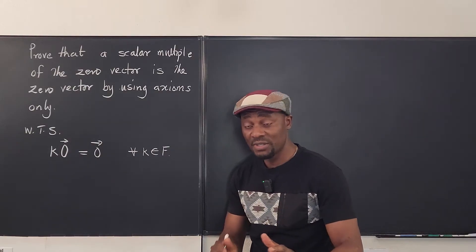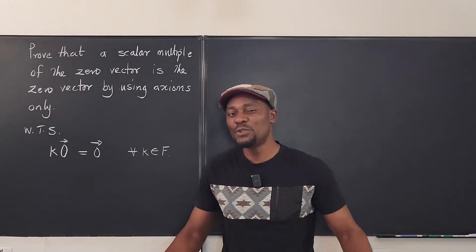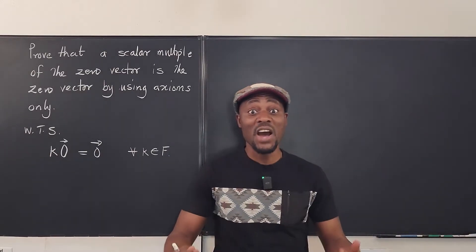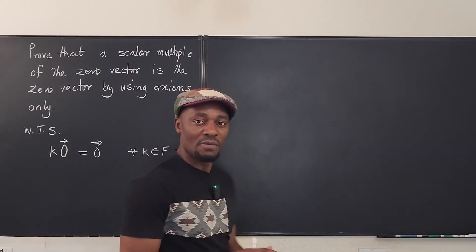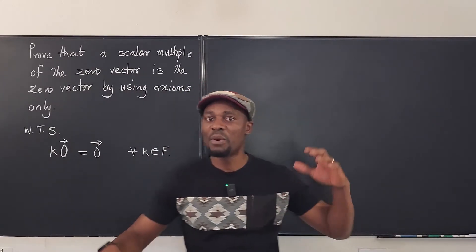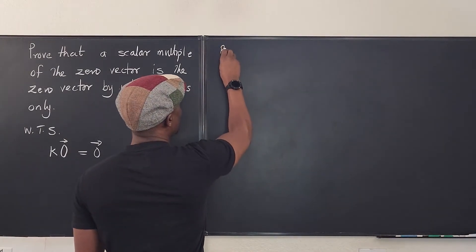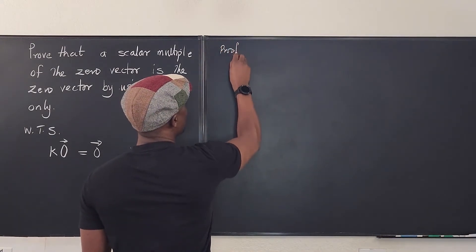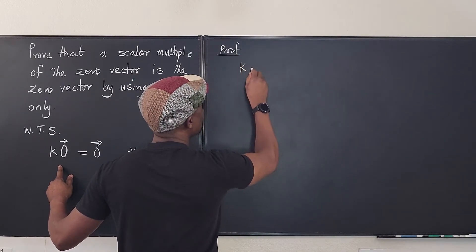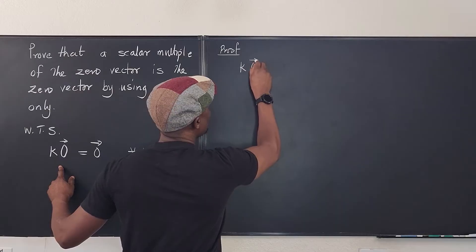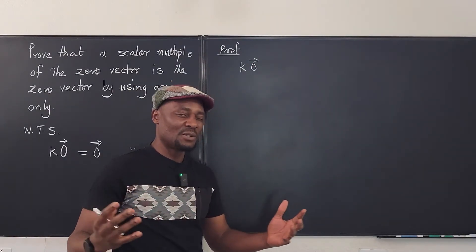Our mission is to show that k times the zero vector will be equal to the zero vector. What do you do using just axioms? You cannot assume we know anything. You're going to start from one side and then end up on the other side. Your first step is to write what you have: k times the zero vector.